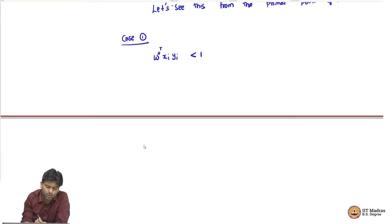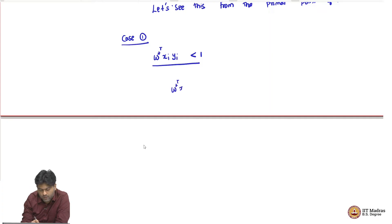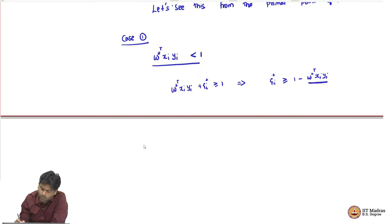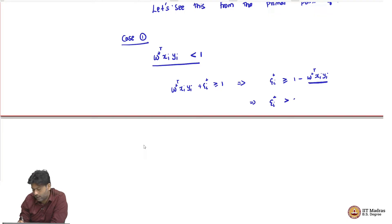Now what can we say about this? The moment I observe that this happens, I know that from my feasibility W star transpose x_i plus psi_i star is greater than or equal to 1. This means that psi_i star is greater than or equal to 1 minus W star transpose x_i y_i. Now this implies — we are assuming that the point satisfies W star transpose x_i y_i is strictly less than 1 — so epsilon_i star is strictly greater than 0, because this quantity is strictly less than 1, the whole thing has to be strictly greater than 0.